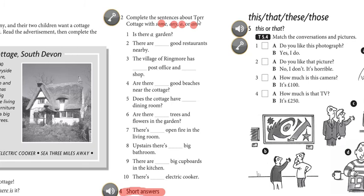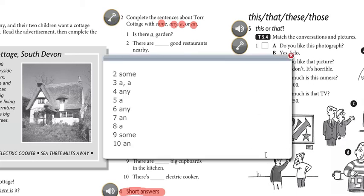Next question, question number two. Complete the sentences about Tor cottage with some, any, a, or an. This is the answer key for question number two here.